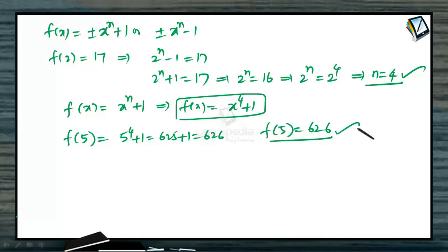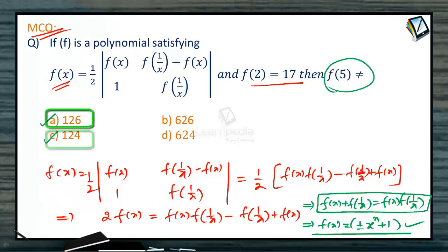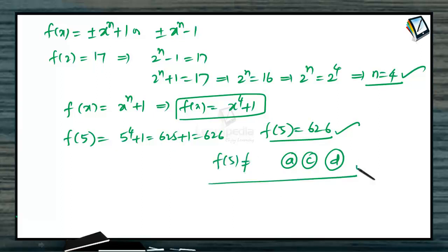Since f of 5 is a constant value 626, we need to find what f of 5 is NOT equal to. So f of 5 is not equal to 126, not equal to 124, not equal to 624. Hence options A, C, and D are correct — f of 5 is not equal to these three values.